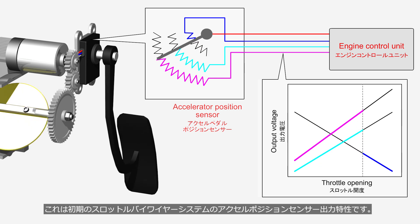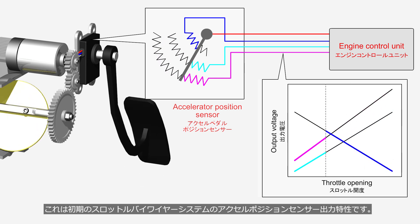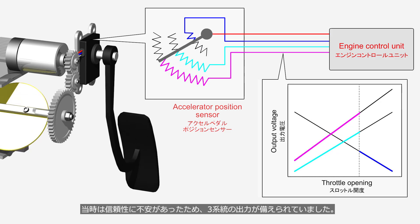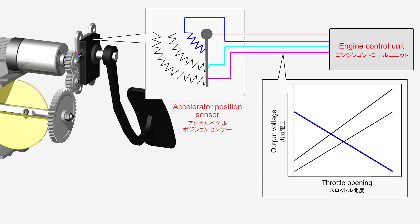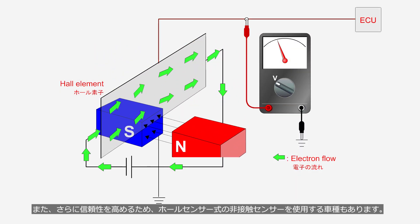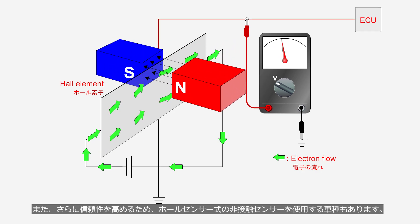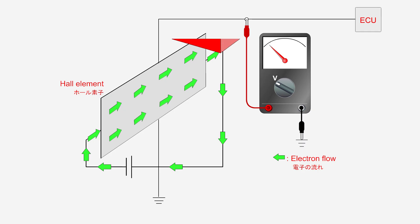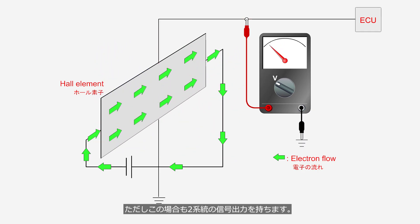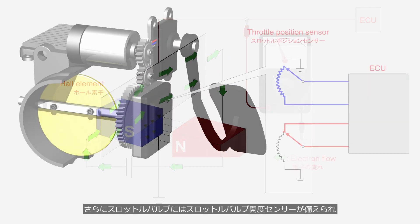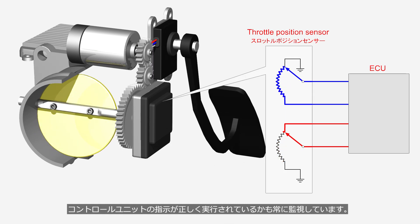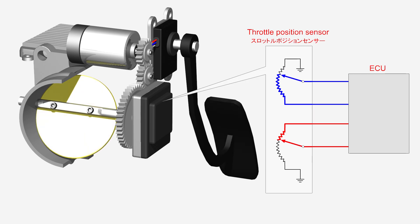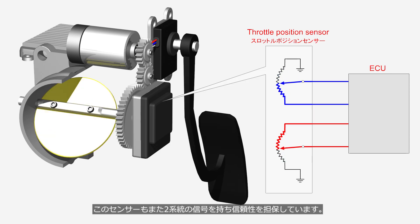Early throttle-by-wire systems featured three independent outputs from the accelerator position sensor due to reliability concerns. Currently, dual outputs are the mainstream, and some vehicle models use non-contact sensors based on Hall effect technology — even so, dual signal outputs are still retained. Furthermore, the throttle valve is equipped with a throttle position sensor that continuously monitors whether the control unit's commands are being correctly executed, and this sensor also has two independent signal channels, ensuring reliability.